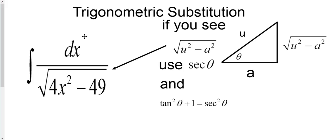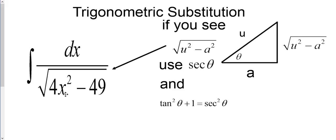When you first start, I always say you look for a basic integral. If that doesn't work, you look for u-substitution. If u-substitution doesn't work — where you take the bottom and get its derivative — you try integration by parts. If that doesn't work, you try partial fractions. If you have a denominator but no linear or quadratic factors, the last resort is trig substitution, especially when you have a square root and the difference of two squares, like 4x² minus 49.